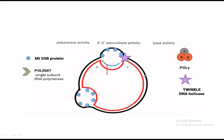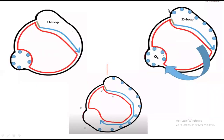As synthesis proceeds, a D-loop structure forms. The blue color represents the new strand being synthesized against the heavy chain. Twinkle helicase and the single-stranded binding proteins continue their activity throughout this process, keeping the pathway clear. The new strand continues extending along the heavy chain template.